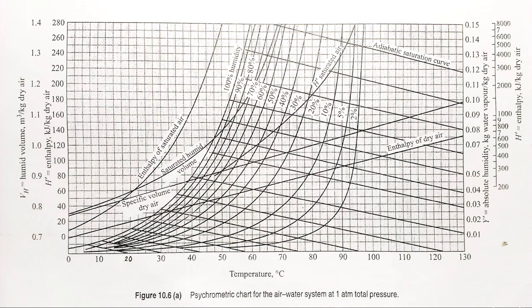Next, on the psychrometric chart, find the absolute humidity value by using wet bulb and dry bulb temperature.